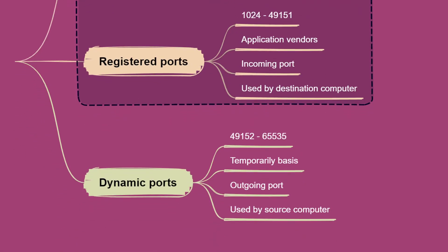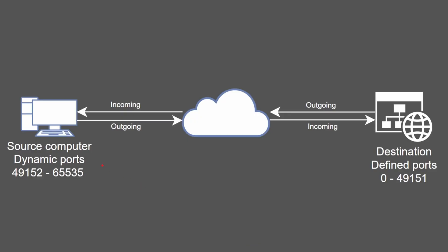All ports starting at 49,152 and higher up to 65,535 are dynamic ports, also known as private or ephemeral ports. These ports are used by applications on a temporary basis to send data to a destination address on an open port. Dynamic ports are normally used by the source computer which initiates a request, and they allow multiple clients to connect to defined ports.